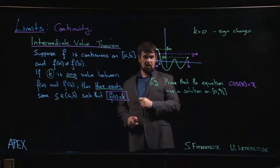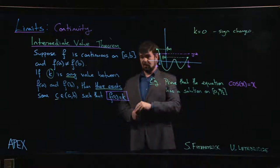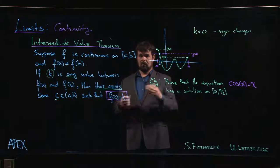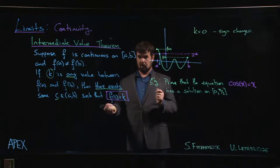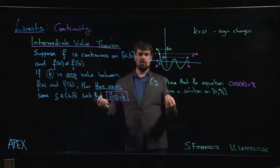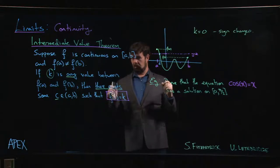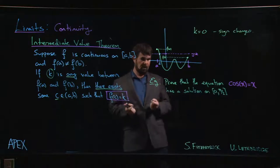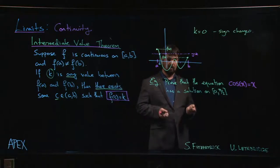The only other way the function can change from positive to negative is at a point of discontinuity. So if you've got a number line and you've marked off all the zeros and you've marked off all the points of discontinuity, you've accounted for every possible place where the function might change sign. You know that between those points, the function can't have any other sign changes.